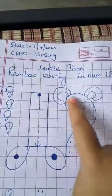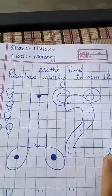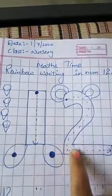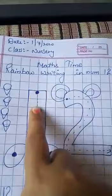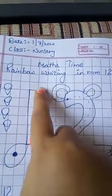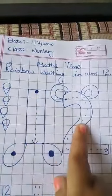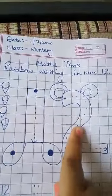This one is number 2. Number 2. This one is number 1. Number 1. 1, 2, 12. 1, 2, 12.